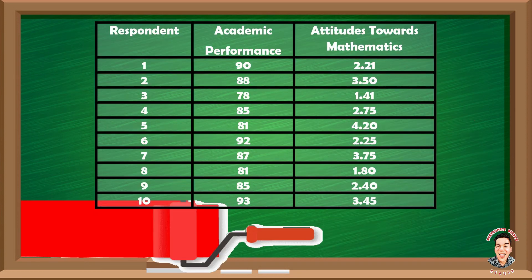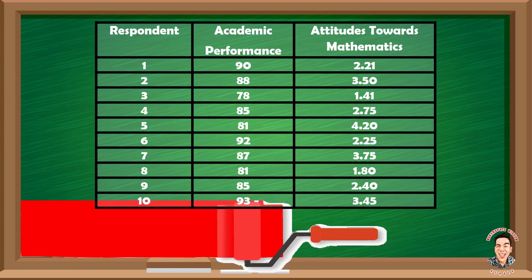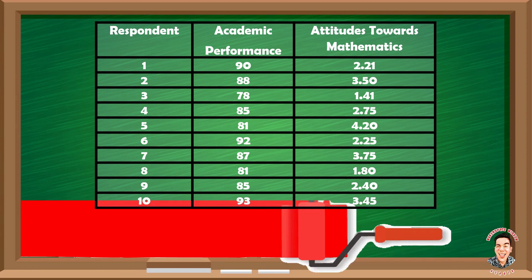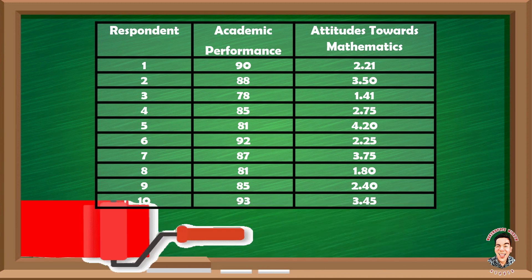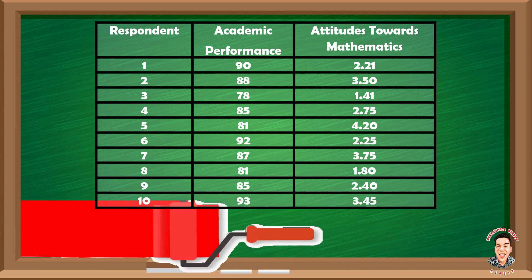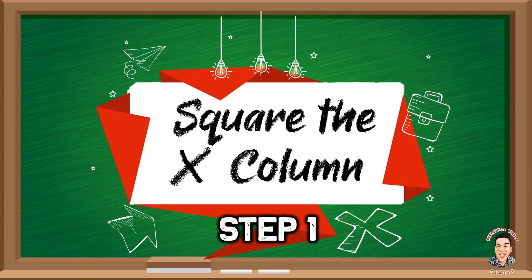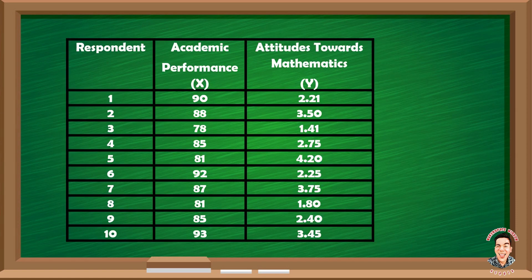We have here the table of the academic performance and attitudes towards mathematics with 10 respondents. Step 1: Square the x column. Here, x represents the academic performance.